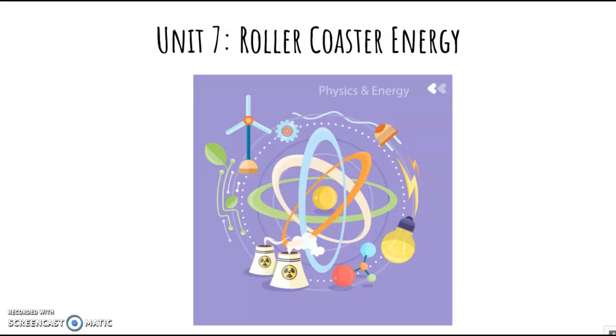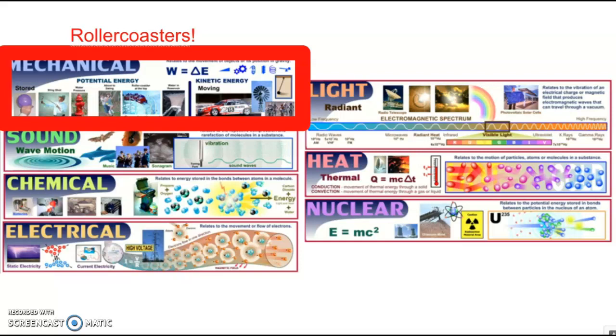This presentation focuses on conservation of energy, and we are in unit 7, the roller coaster energy unit. I want to remind you of what we talked about last class, where the different types of energy exist in our universe. We specifically started to zoom in on mechanical energy, talking about gravitational potential energy and kinetic energy in particular.